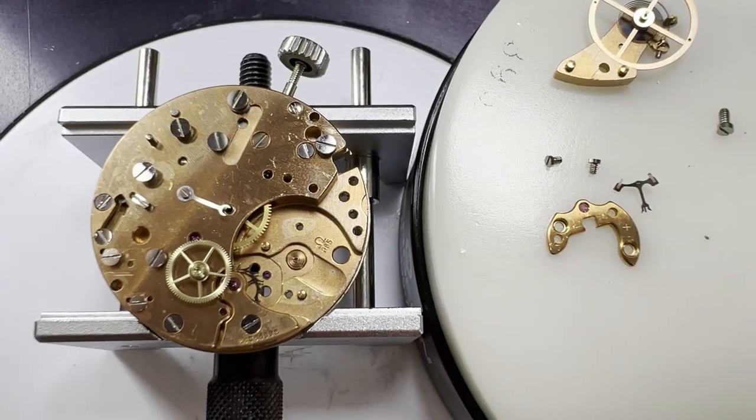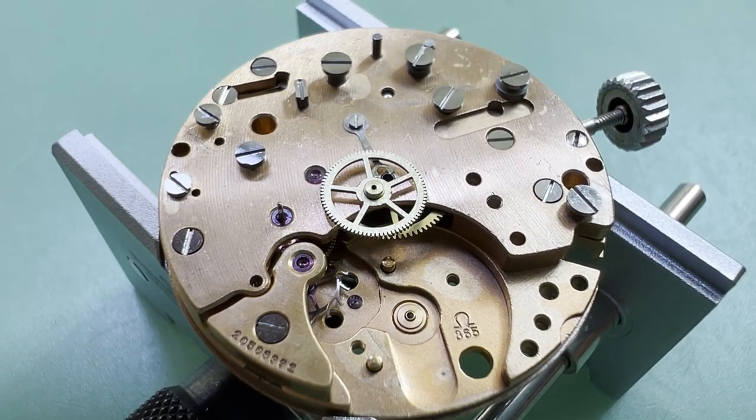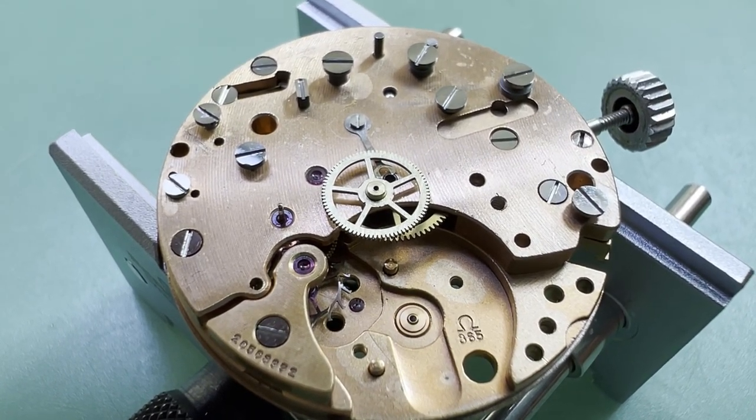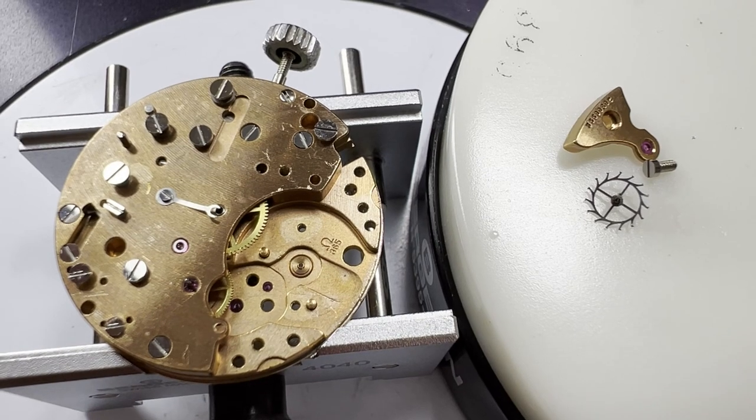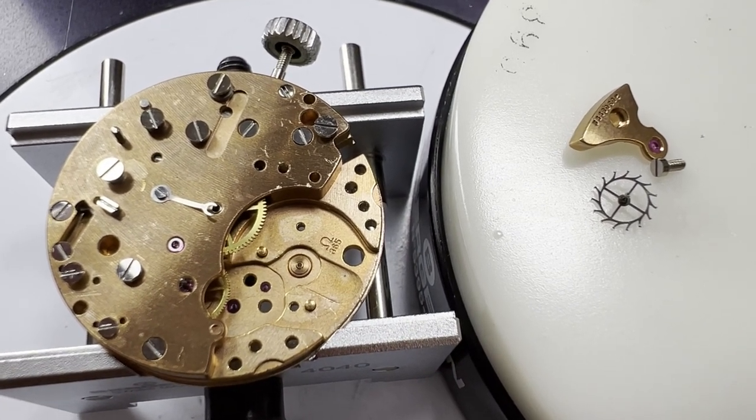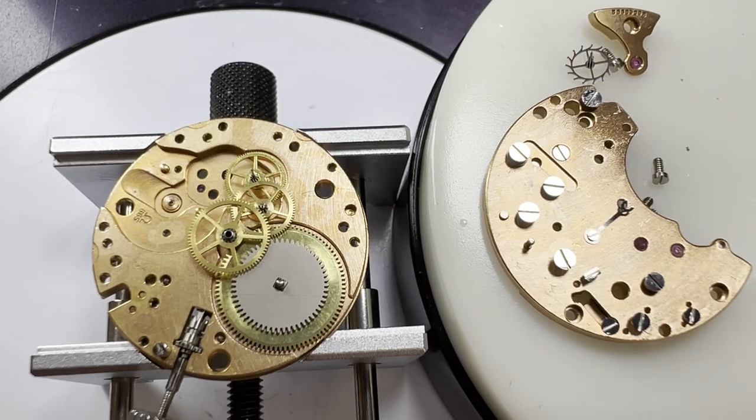The balance and pallet forks are taken out before the chronograph drive wheel is removed, so as to not damage the escape wheel or pallet forks. We continue the disassembly of the base movement with the escape wheel, the train wheel or chronograph bridge.